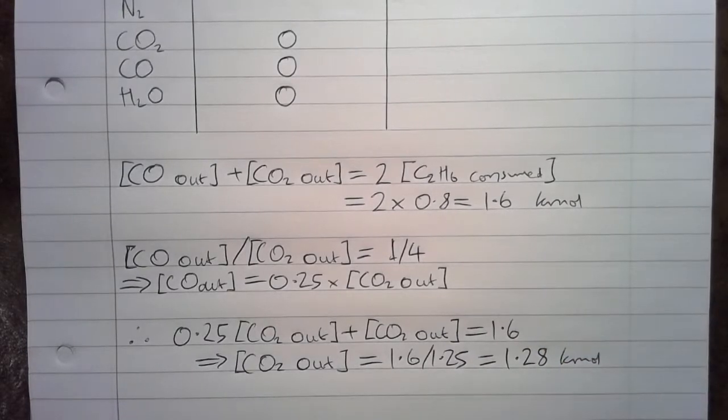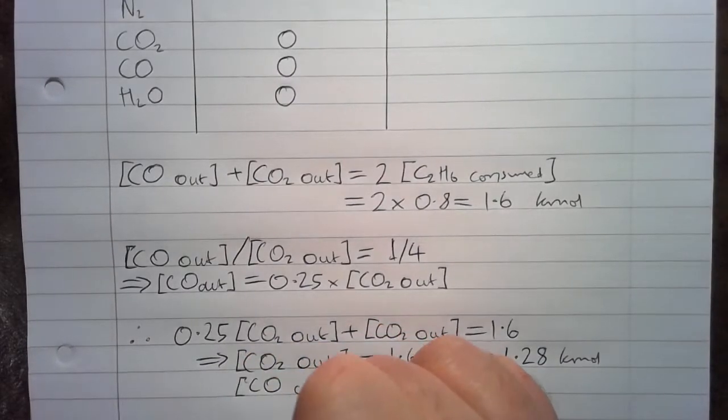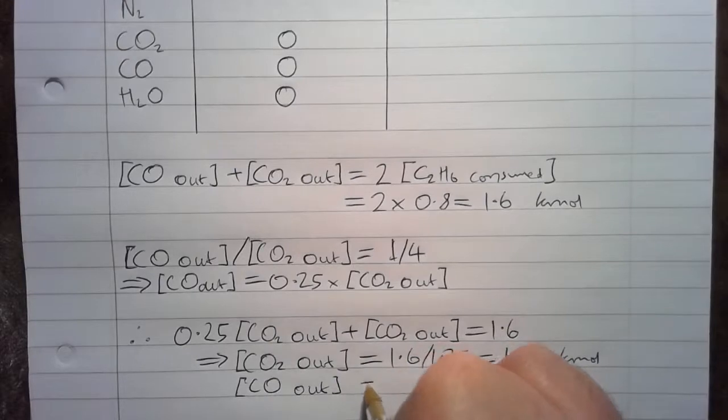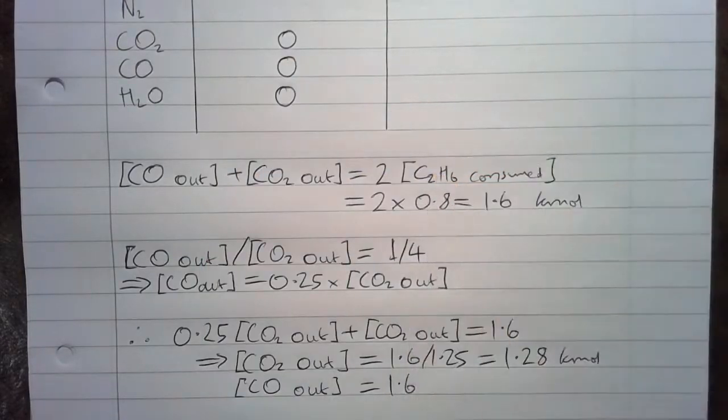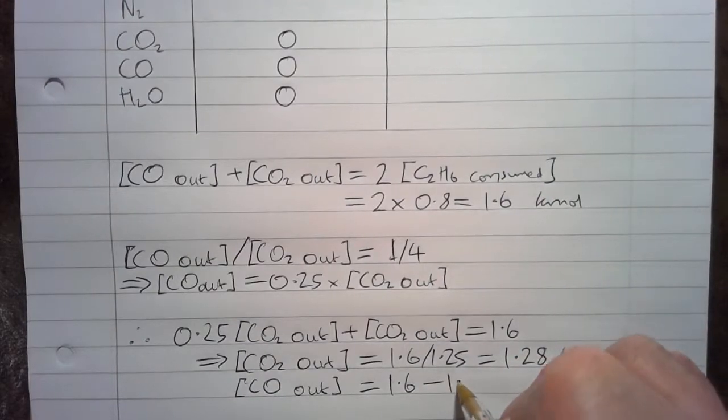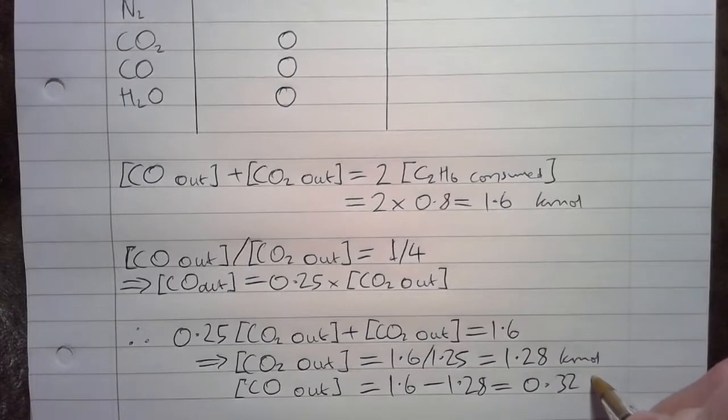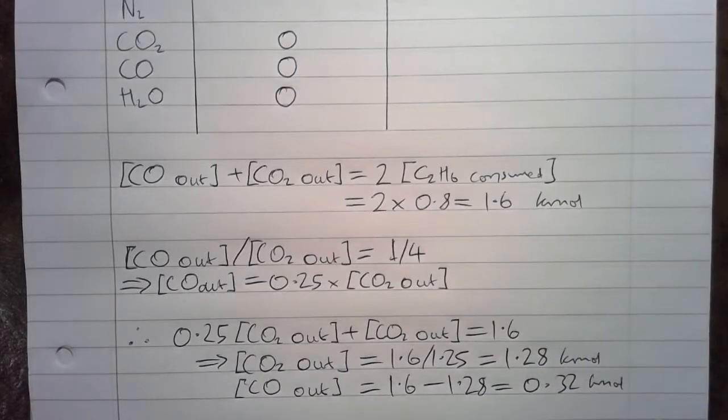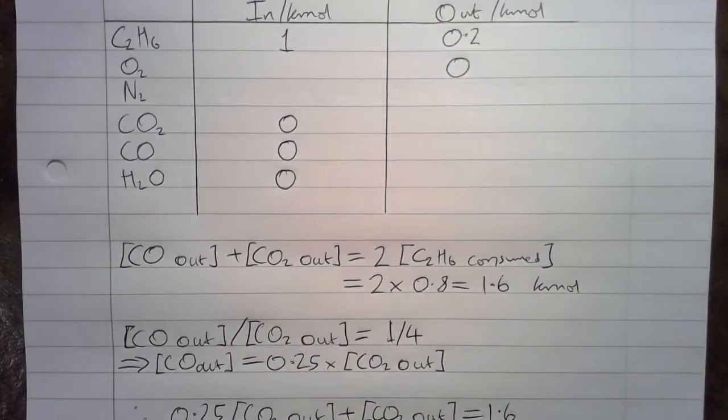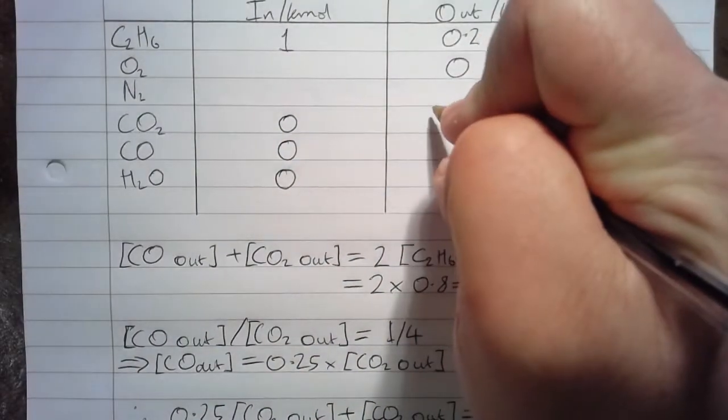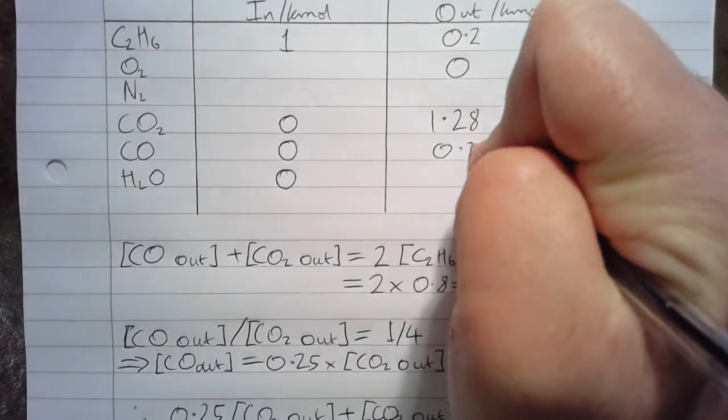And then by difference from the top equation, the CO out equals 1.6, the combined amount of those two gases, take away 1.28, equals 0.32 K moles of CO in the outlet. So then we can fill those in. We know we have 1.28 and 0.32.